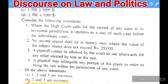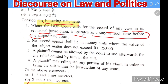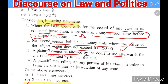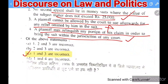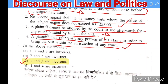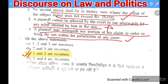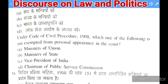Next question: consider the following — (1) when the High Court calls for record in revision, it operates as a stay of the case before the subordinate court — No; (2) no second appeal lies in money suits where value does not exceed Rs. 25,000 — correct; (3) a plaintiff cannot be allowed to sue afterward for any relief omitted in the suit — incorrect; (4) a plaintiff may reduce his claim to bring the suit within a court's jurisdiction — correct. Statements 1 and 3 are incorrect.